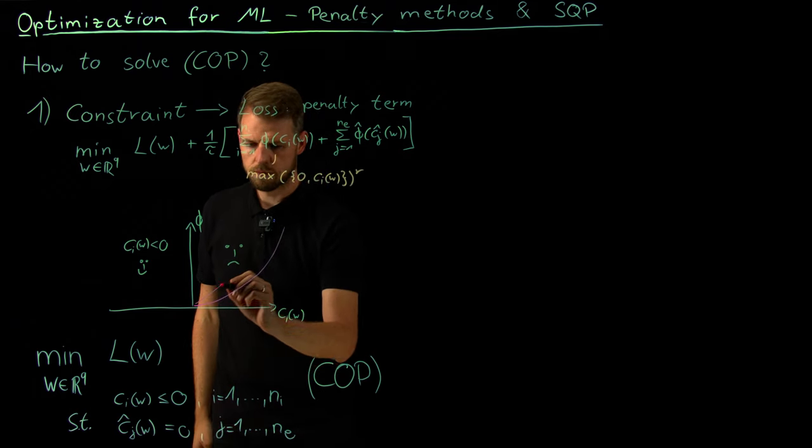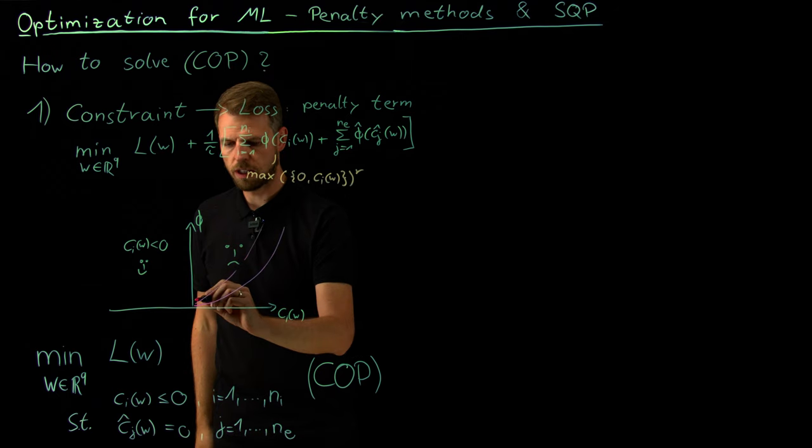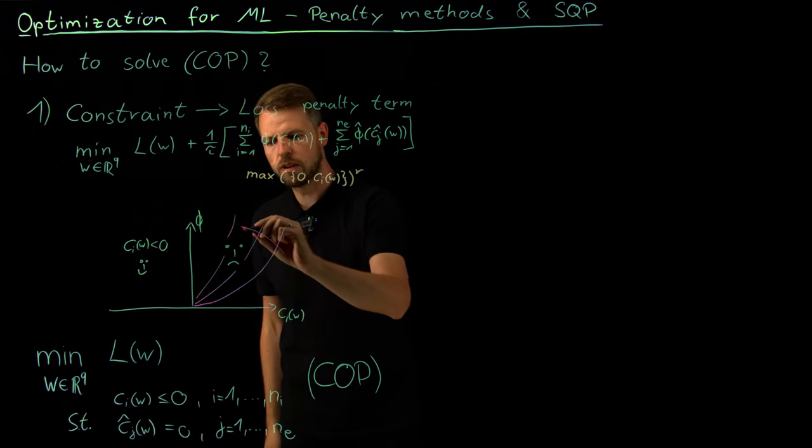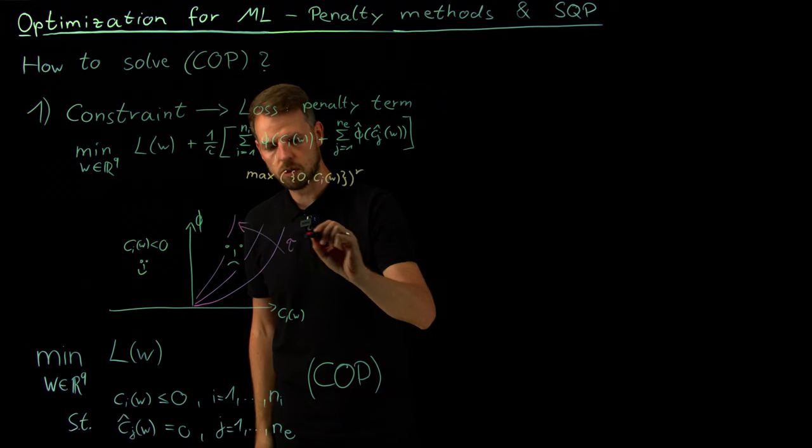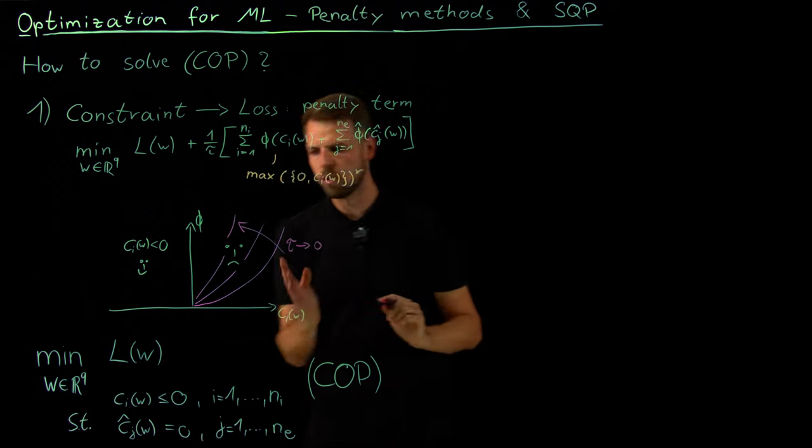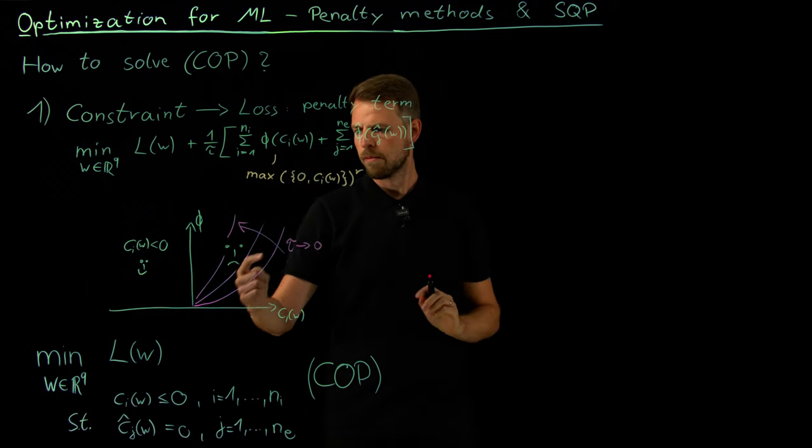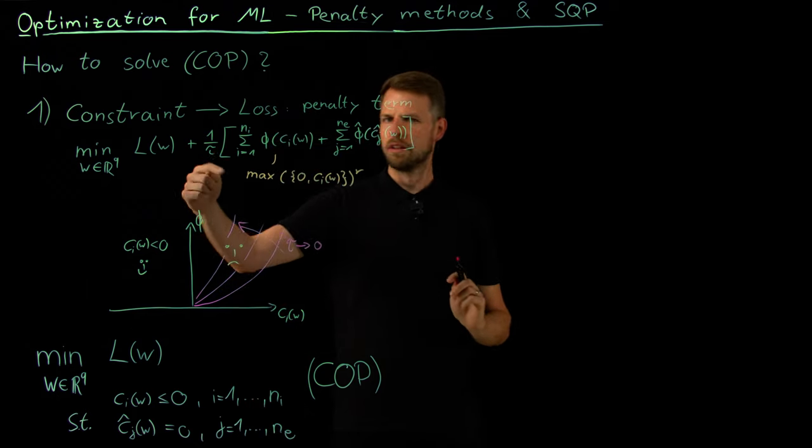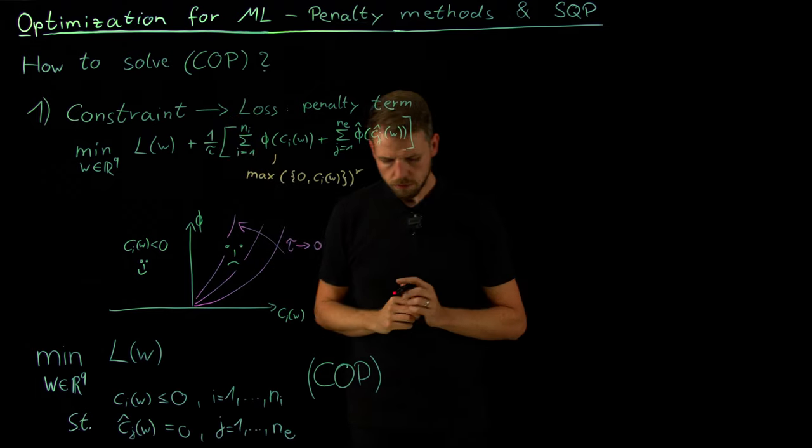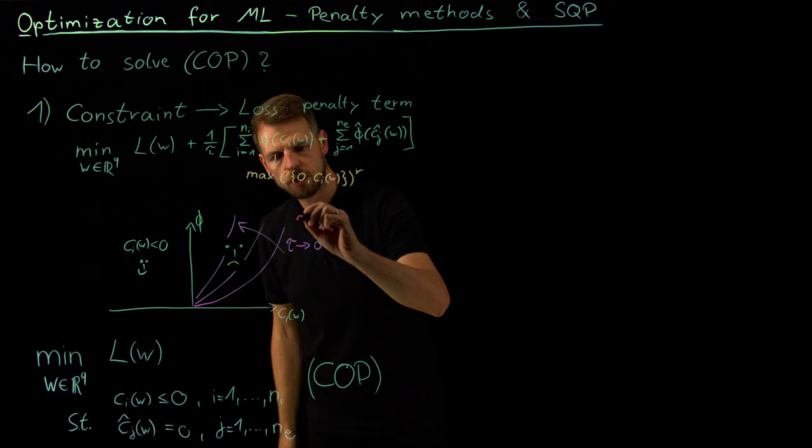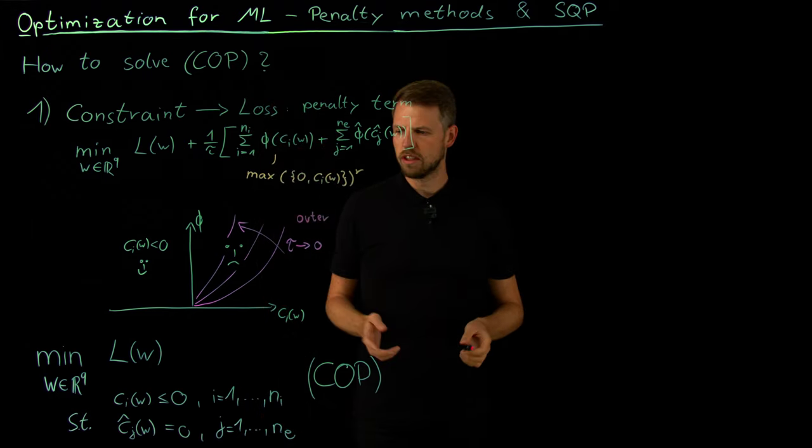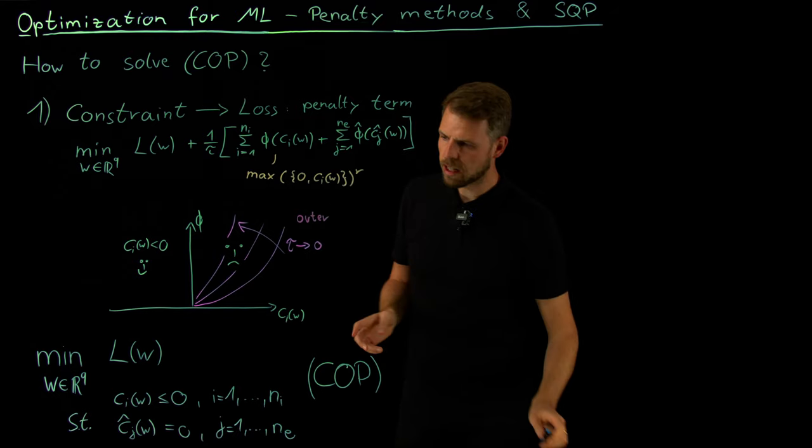And if we increase the tau, the smiley face becomes even sadder. We have an increase of how strong, not the tau increases, but the tau goes to zero. So it shrinks, meaning the smaller we make it, the harsher we penalize our constraint violation. So this is what we call an outer penalty.